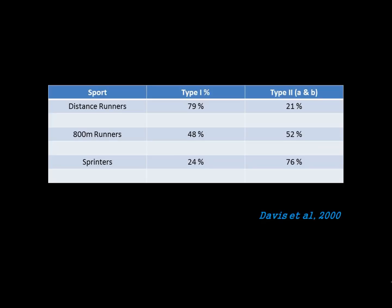Studies have been done with athletes looking at how much of each muscle fibre type they have. Distance runners tend to have a high percentage of Type 1 muscle fibres, which is of course what they need. Sprinters have a very high proportion of Type 2, which again they need. For activities such as the 800 metres, athletes actually require a little bit of both. Your genetics can really decide what sport you are best suited to.